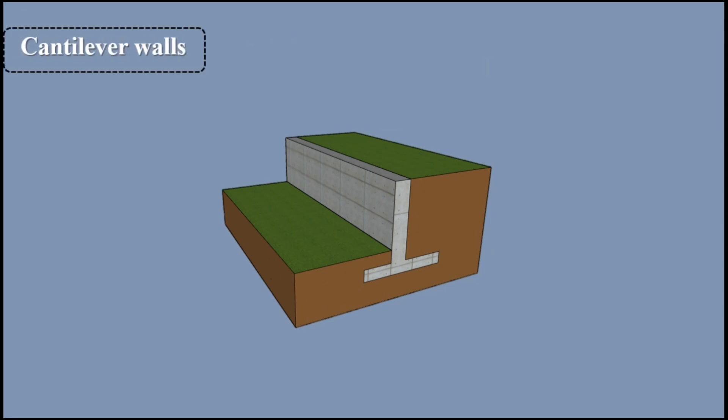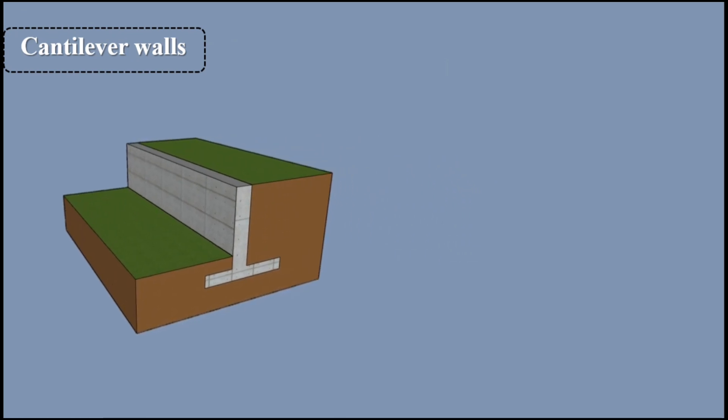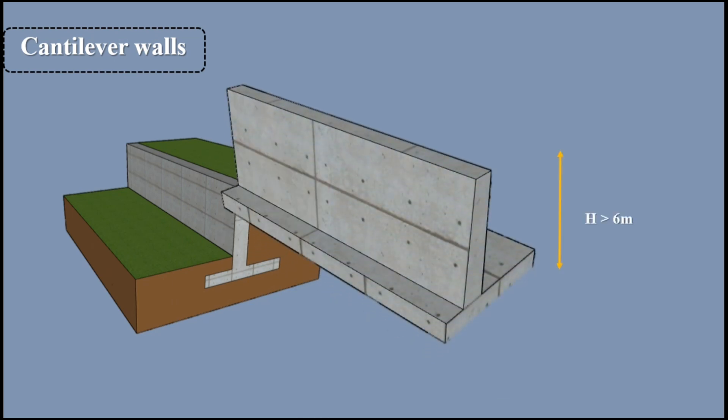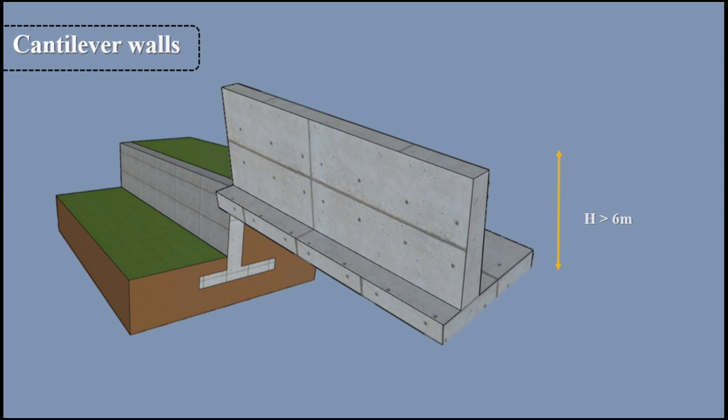2. Cantilever Walls: They are the most common type of retaining walls. A cantilever retaining wall consists of a wall connected to a foundation. A cantilevered wall holds back a significant amount of soil, so it must be well engineered. It consists of a vertical wall, heel slab, and toe slab, which act as cantilevered beams. It is generally used when the wall height is up to 6 m.